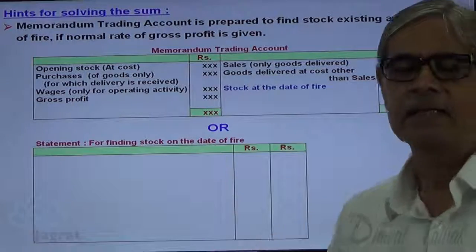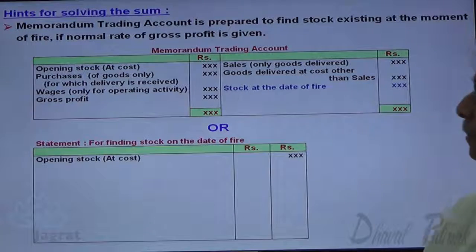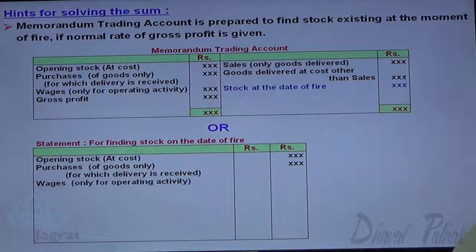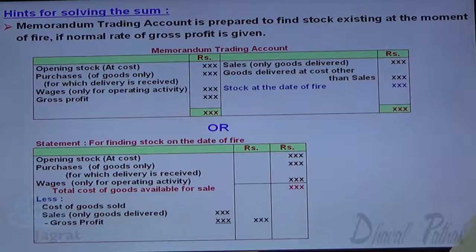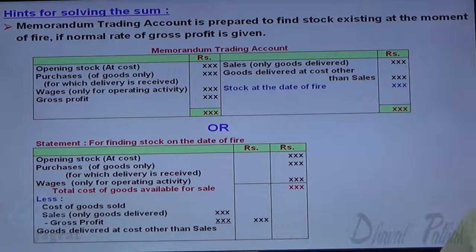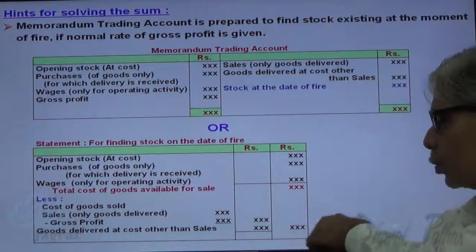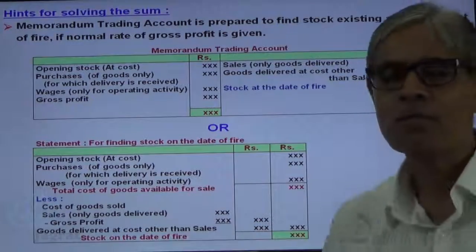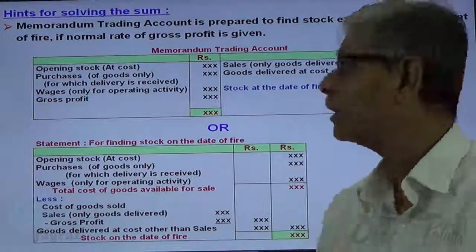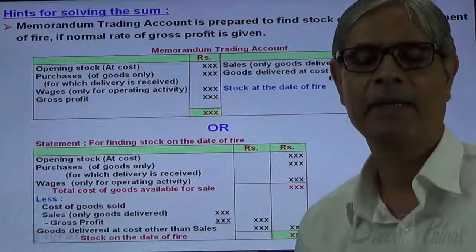All the details will be presented in this statement in a different mode: opening stock, plus purchases of goods, plus wages for operating activity — the total is known as the total cost of goods available for sale. From that, deduct the cost of goods sold (sales minus gross profit), and also deduct goods delivered at cost other than sales. You will get the stock on the date of fire. These are the optional ways to find out the stock that existed at the moment of fire.